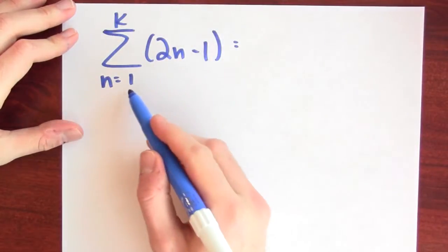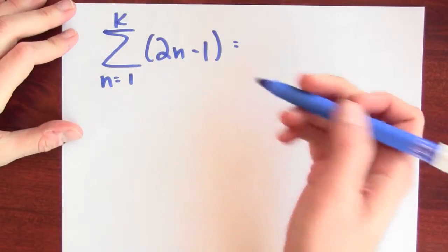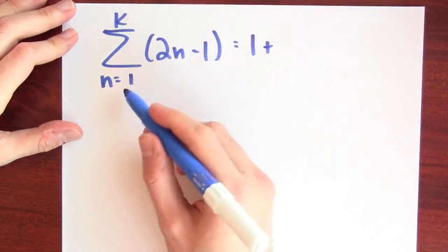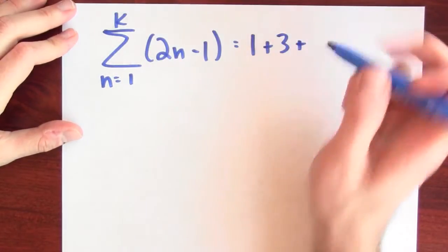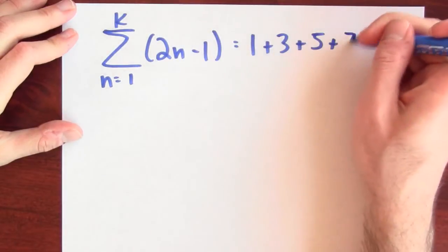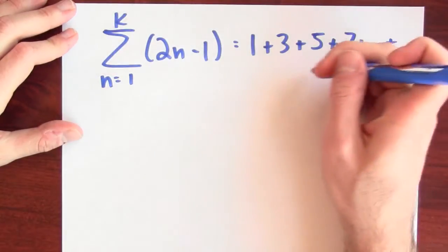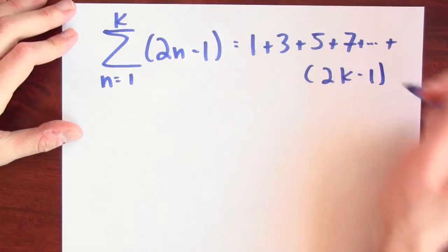And what this notation means is that I plug in the numbers from 1 to k into this expression and add them up. So plug in n equals 1, I get 1, plug in n equals 2, I get 3, plug in n equals 3, I get 5, plug in n equals 4, I get 7, and I'm going to keep on going until I end with 2k minus 1.